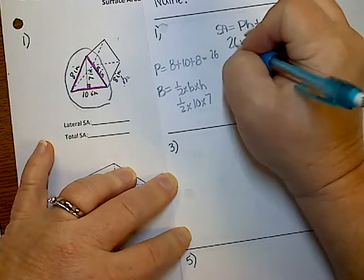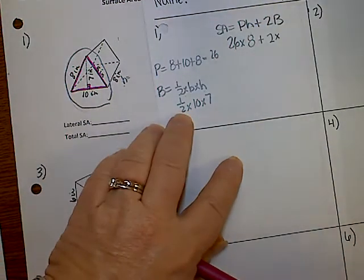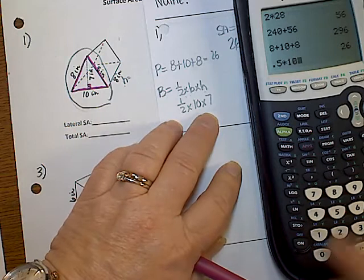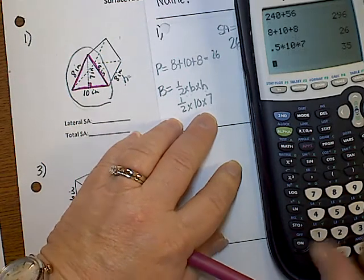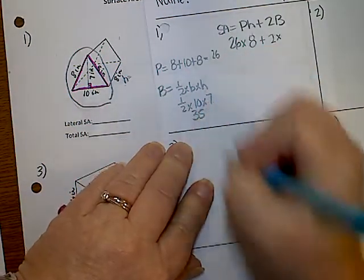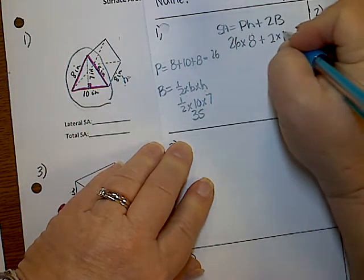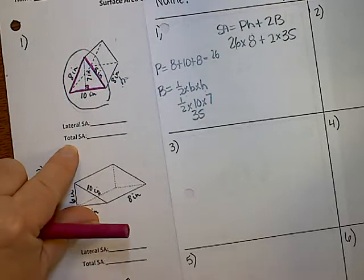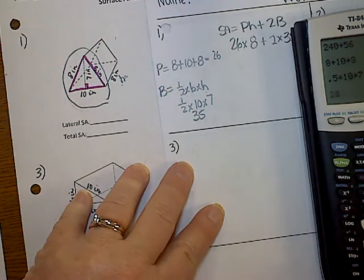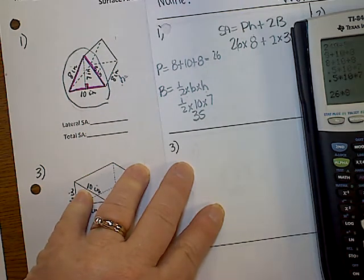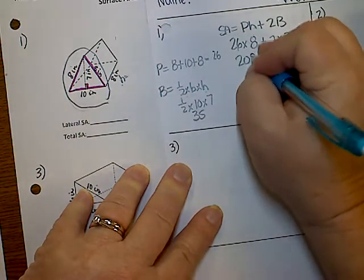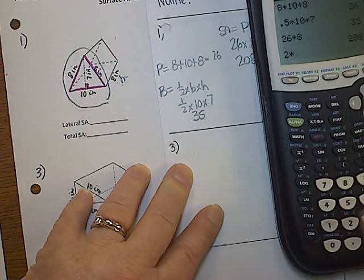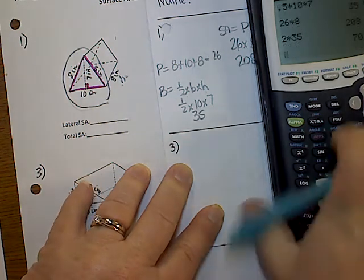So I'm going to plug in 26, and then I've got 1 half, which is 0.5, times 10, times 7, which is 35. And so I'm going to plug in big B is 35. Now I'm going to do, now they're wanting lateral and total, so I'm going to do 26 times 8. And I find out that that's 208.